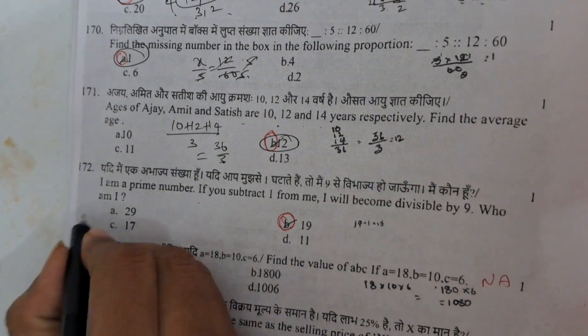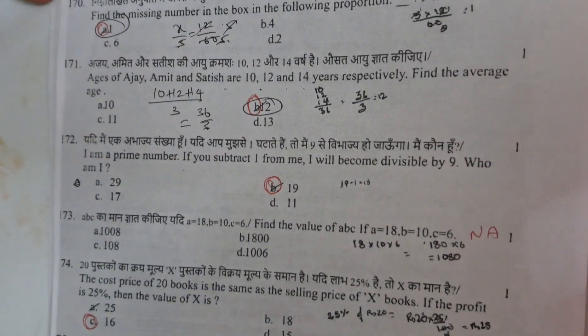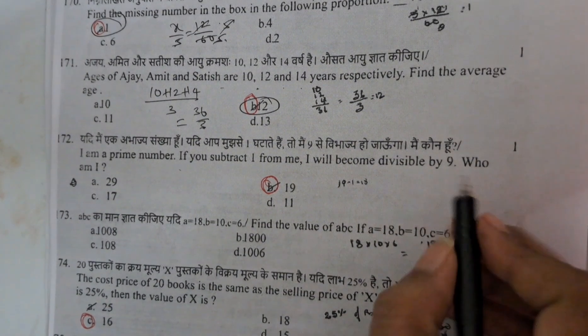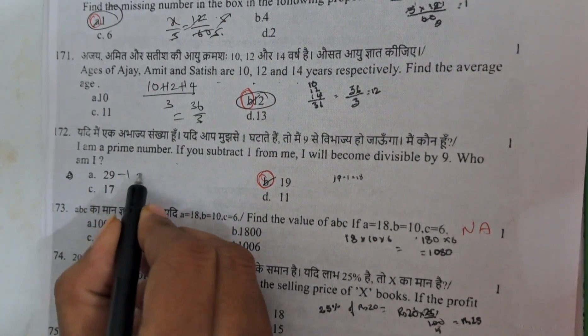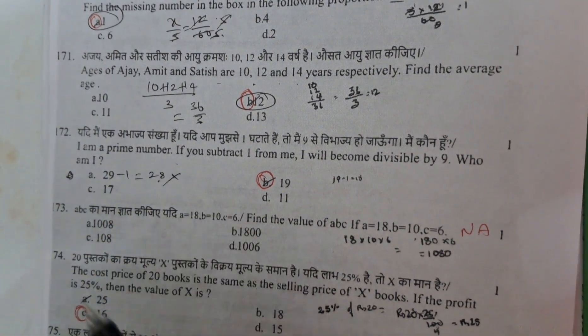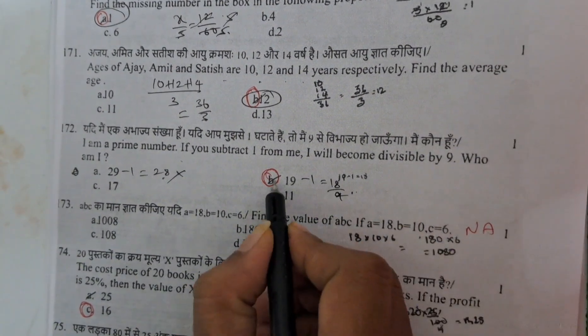I am a prime number. This is also one type of logical question. I am a prime number. If you subtract 1 from me, I will become divisible by 9. Who am I? Here you need to check this question from the options only. 29 minus 1 is 28. 28 is not divisible by 9. 19 minus 1 is 18. 18 divided by 9 is 2. That's why answer is B.